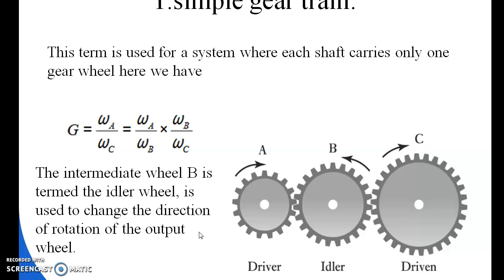First we will discuss about the simple gear train. In this gear train, all gears are connected to individual shafts. Here we can see three gears matched with each other, all connected to individual shafts. Gear A is the driver gear and gear C is the driven gear, meaning motion of gear A is transmitted to gear C. Gear B is the intermediate gear, termed as the idler.